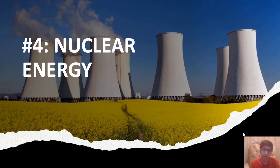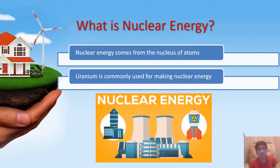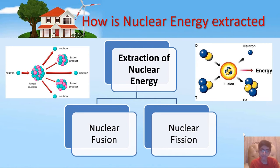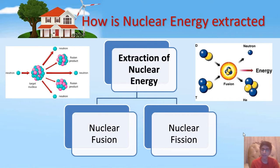The last type of non-renewable energy resource is nuclear energy. Nuclear energy is formed from the nucleus of atoms. Some elements are radioactive by nature and produce a lot of energy when their nucleus is either fused with another element's nucleus or broken down. The most common element used for making nuclear energy is uranium. There are two ways of extracting nuclear energy: nuclear fusion, where two elements are combined and that creates a lot of energy, and nuclear fission, where a nucleus is broken down into different by-products, also producing a lot of energy.